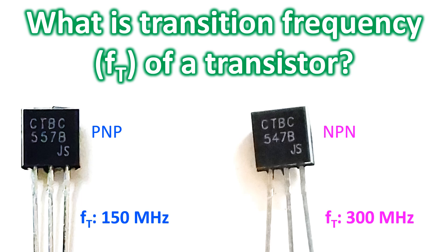In simple terms, it can be considered as the frequency at which the amplifier gain becomes unity, that is the highest frequency below which the transistor can function as an amplifier. It indirectly reflects the total time current carriers, electrons or holes, take to travel from the emitter to the collector.